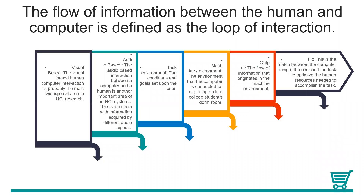Next is about the loop of interaction. The flow of information between the human and computer is defined as the loop of interaction. It may come in several ways: visual-based, audio-based, task environment, machine environment, output, and feedback. For more information, you can read it yourself from the lecture in word format.